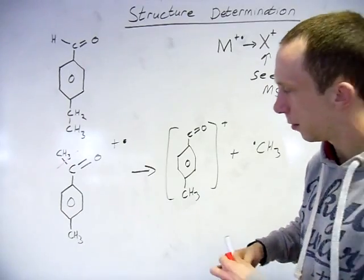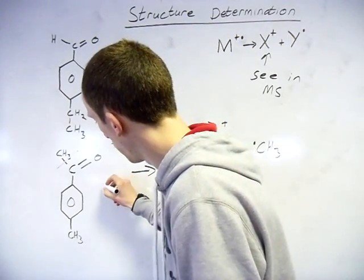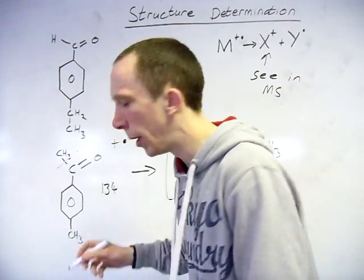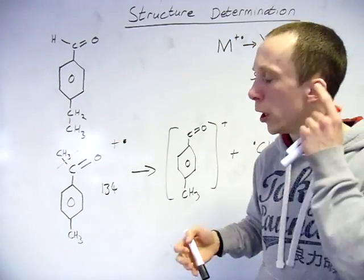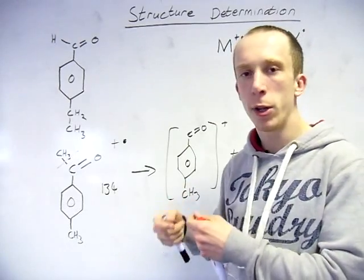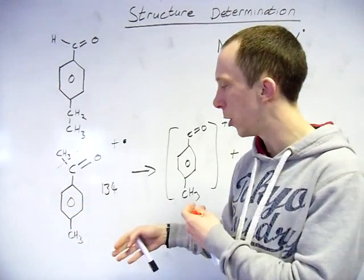And I'm left with this cation here. So in the mass spec, your molecular ion is 134. So remember when you actually look at the spectra, the molecular ion is the biggest number. It's the one furthest to the right.